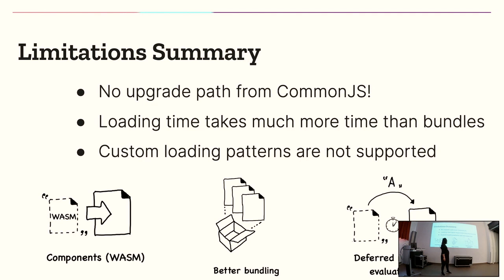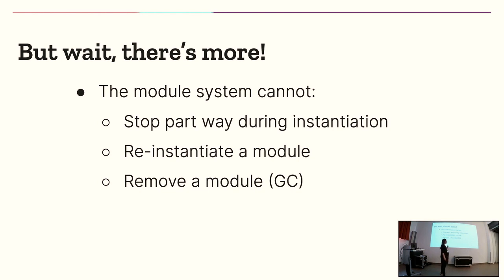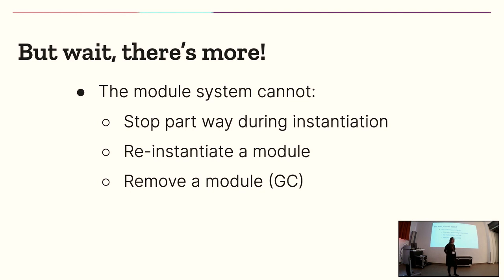We had several pieces all touching the module system, but weren't entirely sure how they fit together. To summarize: components, better bundling, and deferred module evaluation were three proposals that came up independently. This started a broader conversation at committee about what we should do with the module system, because there were more things we couldn't do with modules. We couldn't reinstantiate a module — once you load it, even if you try to dynamically import it, it's going to be a single thing. You cannot remove a module, cannot unlink it. And for hot reloading — if you've loaded a page and want just one module to reload — that's not possible; you have to reload the entire thing.